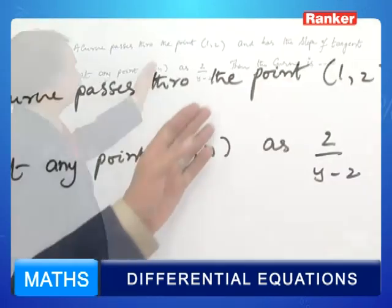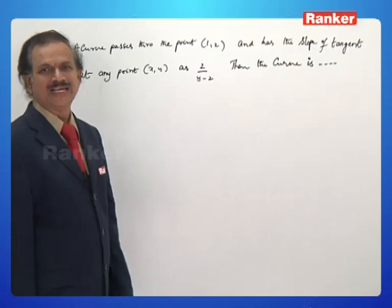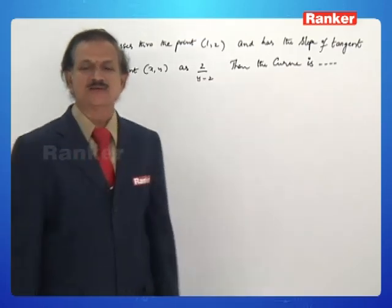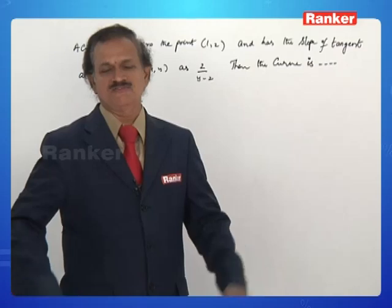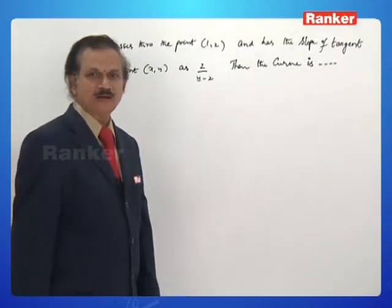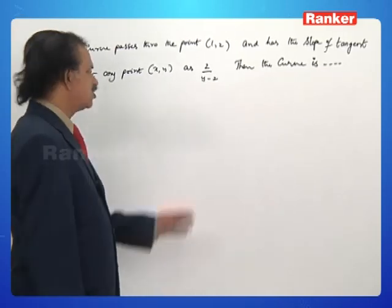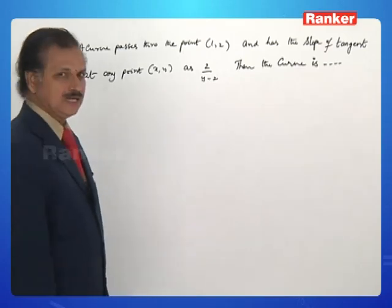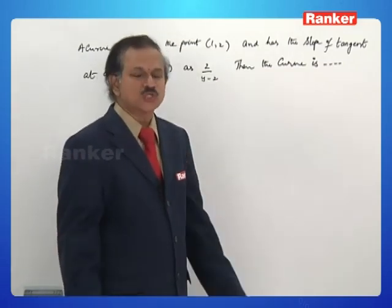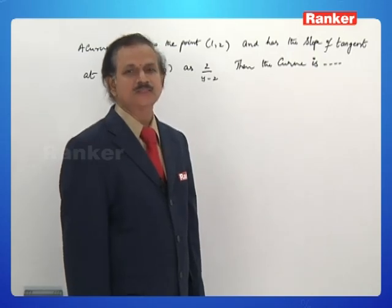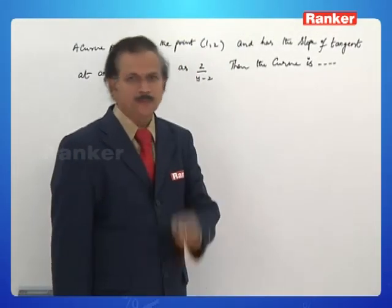Next problem: a curve passes through point (1,2) and has slope of the tangent at any point (x,y) equal to 2/(y-2). Four options are given: straight line, parabola, circle, or ellipse. Since slope equals dy/dx, we have dy/dx equals 2/(y-2), so (y-2)dy equals 2dx.